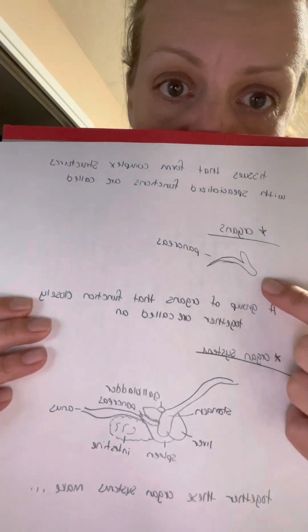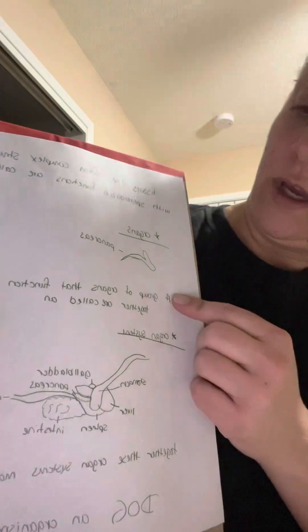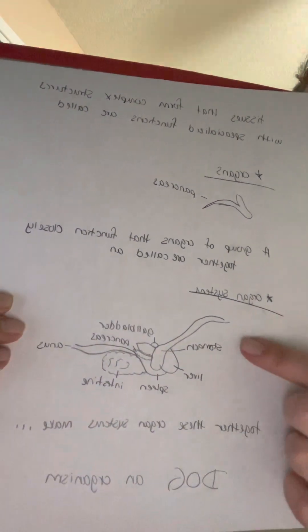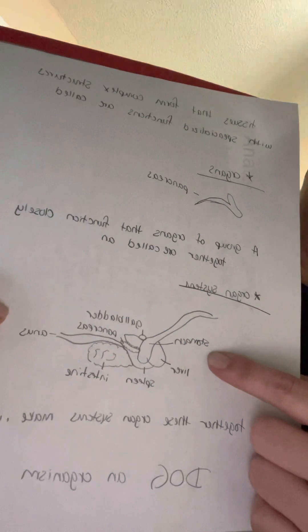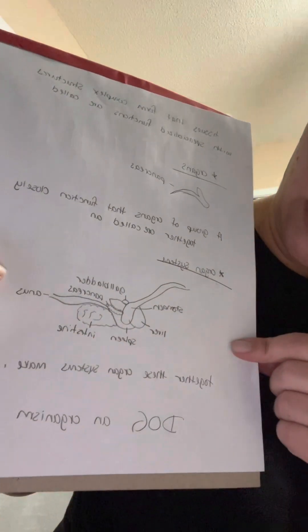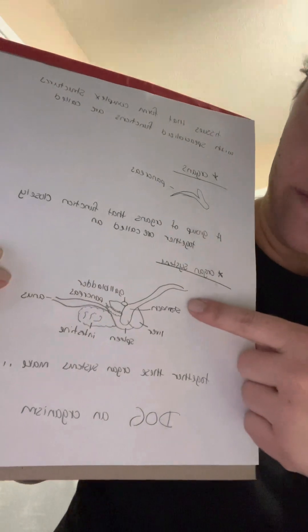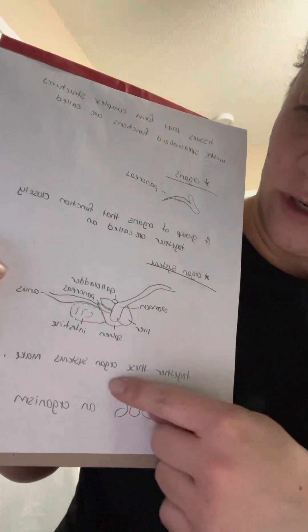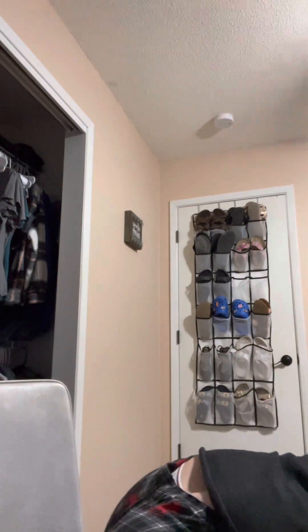Here we have a pancreas. A group of organs that function closely together are called an organ system. Here with the pancreas we have the stomach and the liver and the spleen and the intestines. When we have an organ system, those together make an organism like a dog.